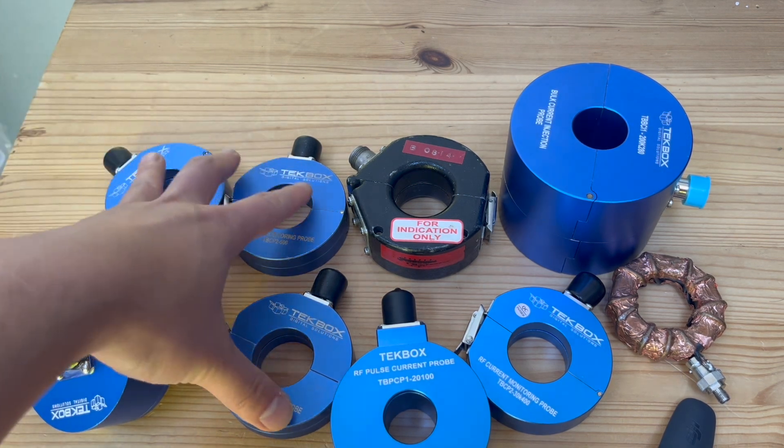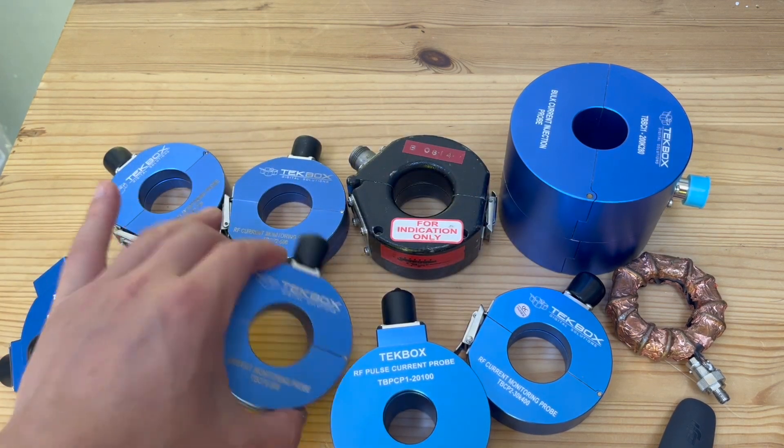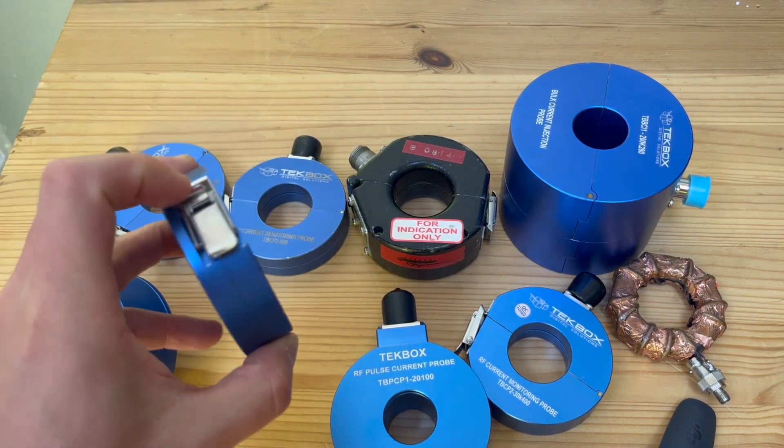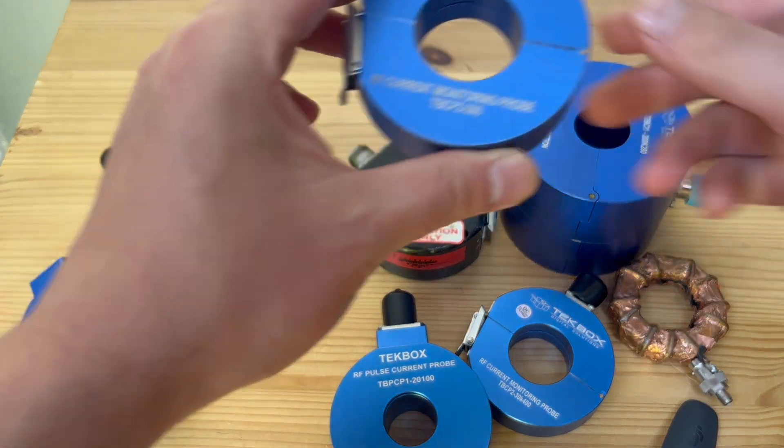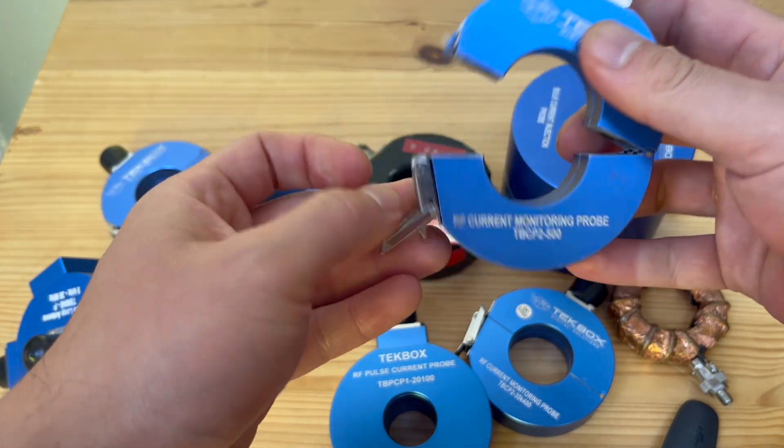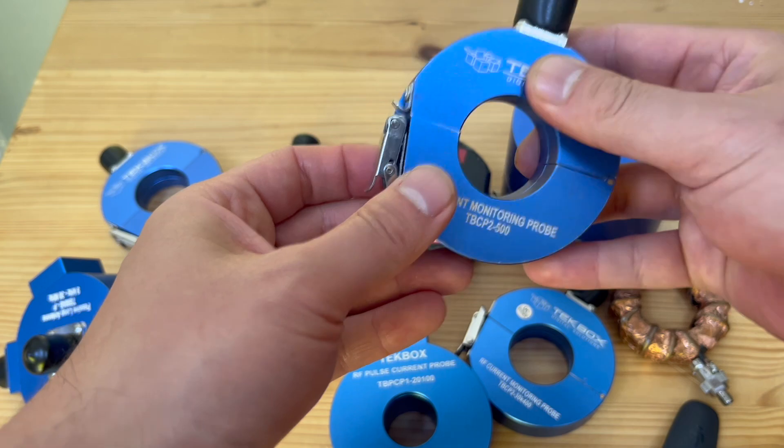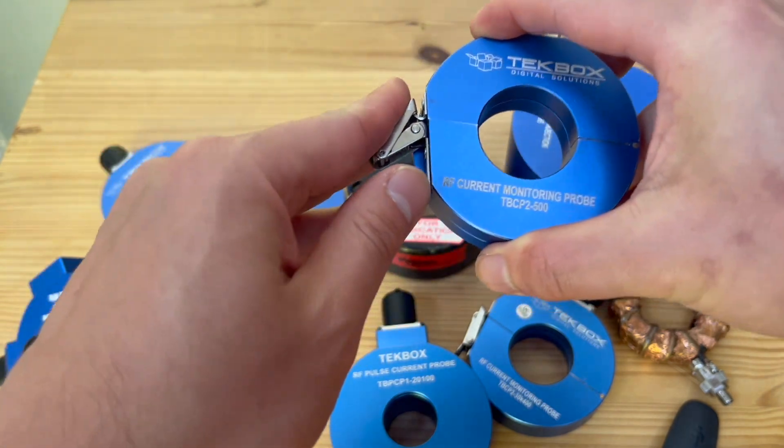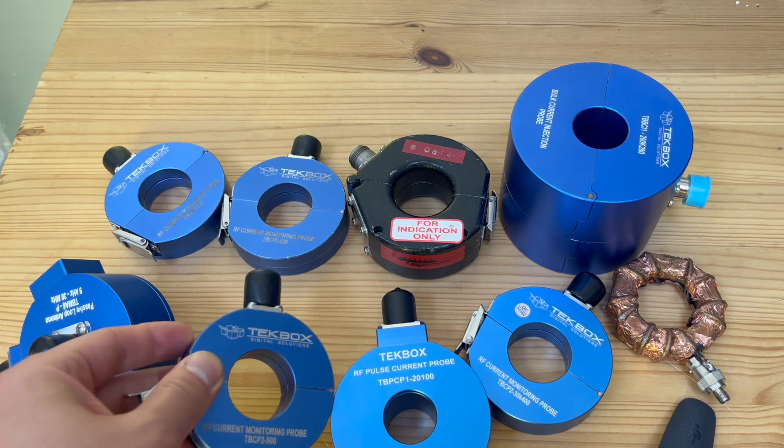You can look at all these probes. They are built very similarly. They have the same inner diameter, they all have this hinge design. This is pretty good because then you can open it up and put the wires under test, and then you close it. These are the hinge type current probes.